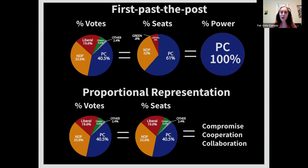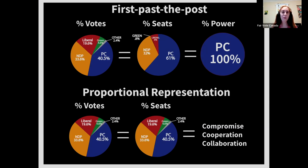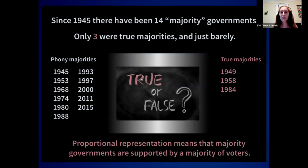Another major problem with first-past-the-post is false majorities. Typically, one party gets about 40 percent of the vote, which gives them about 60 percent of the seats and 100 percent of the power. Over the next four years, if that party does things the other 60 percent of voters don't like, you get ongoing protests and unhappy citizens — because that party doesn't have to consult anyone, even though only about 40 percent supported them.